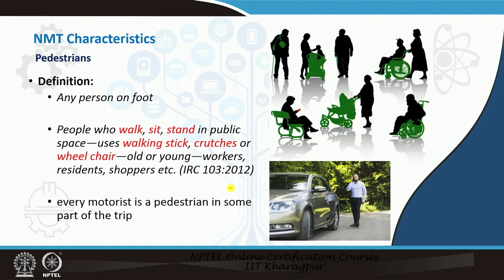When we are going to plan or design any facility, you have to understand who you are designing it for. At a broad level, pedestrians are defined as any person on foot — anybody who is walking is a pedestrian. However, while planning for pedestrians, we also plan for people who not only walk but sit or stand in public spaces, use a walking stick, crutches, or a wheelchair. This definition is given in IRC codes.